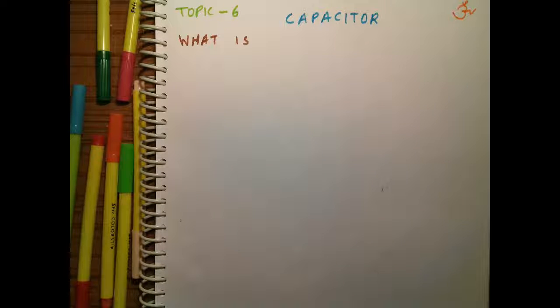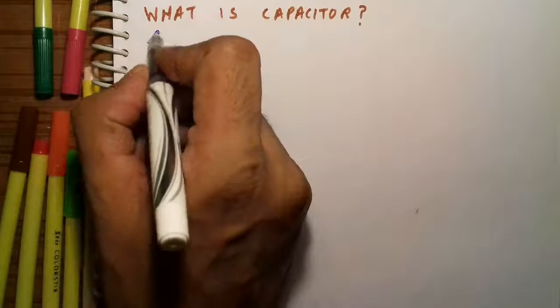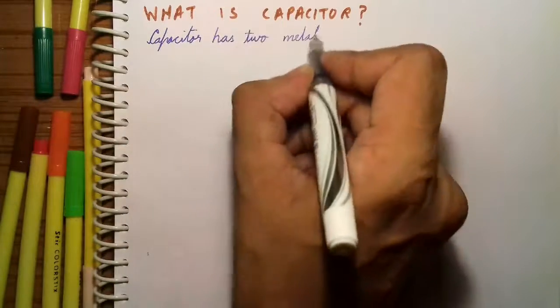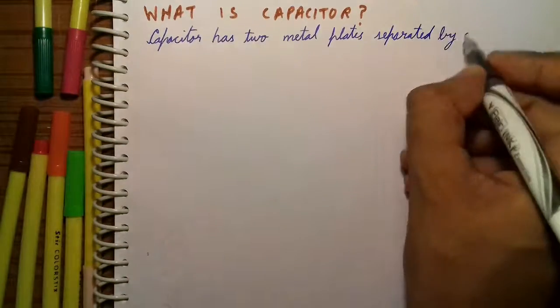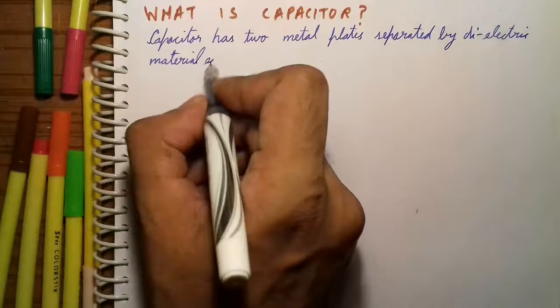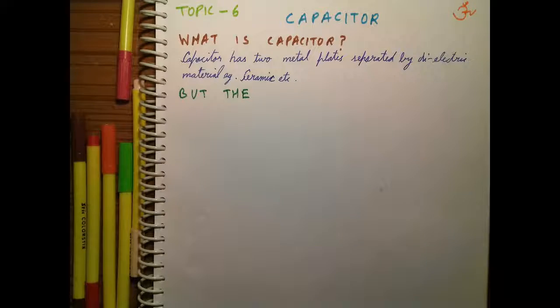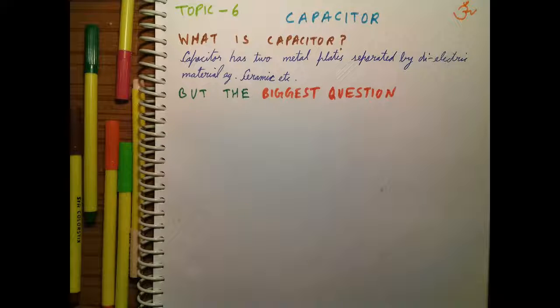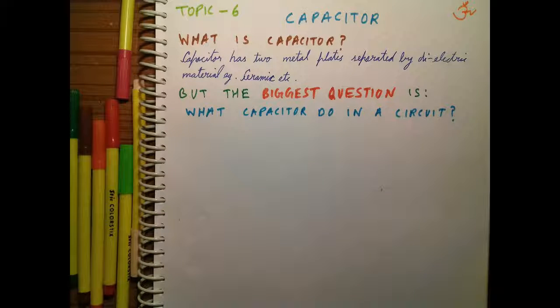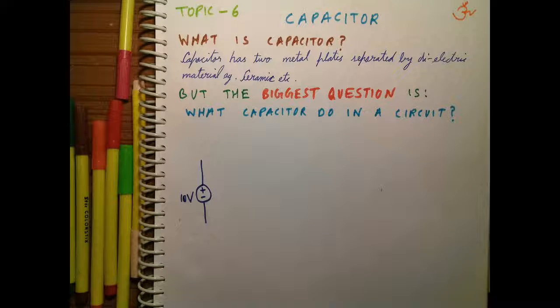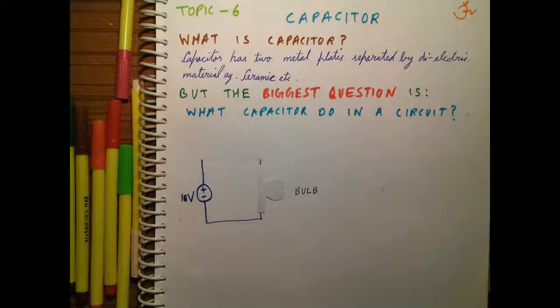What is capacitor? But the biggest question is: what does a capacitor do in a circuit? To understand this, let us take a circuit. Let us take a 10-volt DC source, connect it to a bulb, then to a capacitor C, and then to a switch.